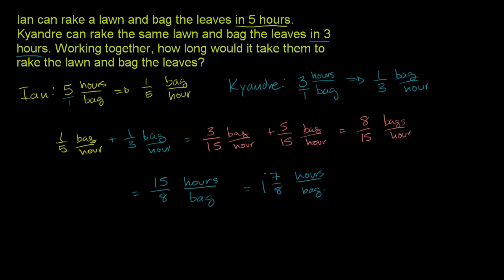And if we really want to get a sense of what 7-eighths is in terms of hours, we can multiply it by minutes. So 7-eighths hours times 60 minutes per hour. And let's see what we can do here. 60 and 8 are both divisible by 4. 8 divided by 4 is 2. 60 divided by 4 is 15.